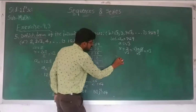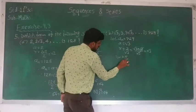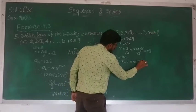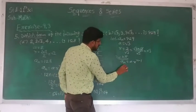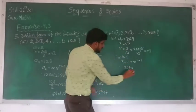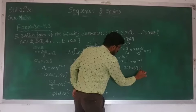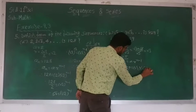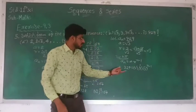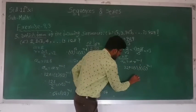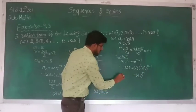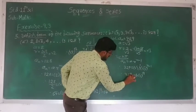We know that a_n is equal to a into r raise to n minus 1. Therefore the nth term is 729, so 729 is equal to first term √3 into common ratio √3 raise to n minus 1. Here √3 raise to 1, so √3 raise to 1 plus n minus 1 gives us √3 raise to n. So 729 equals √3 raise to n.